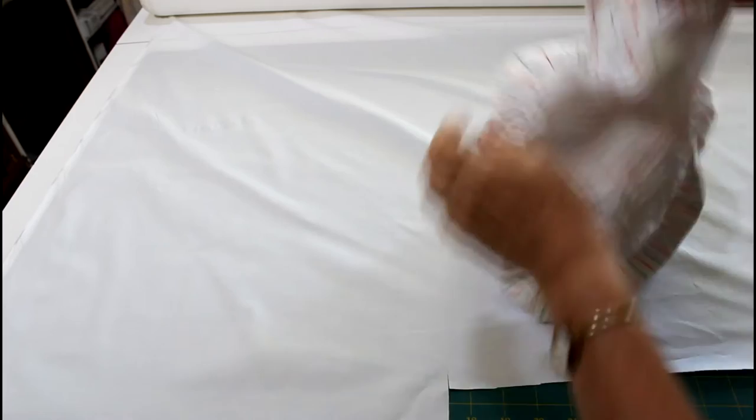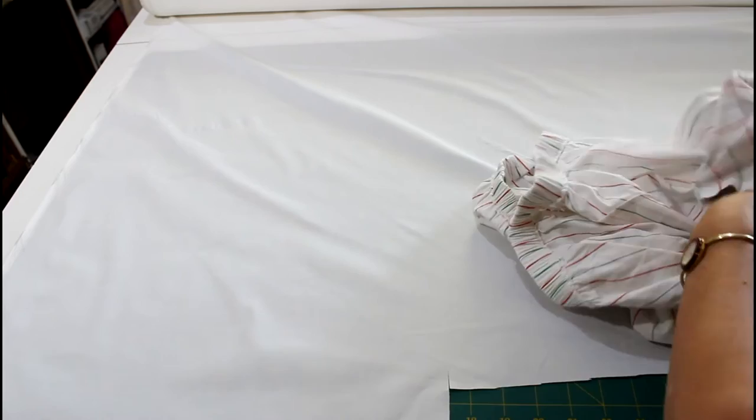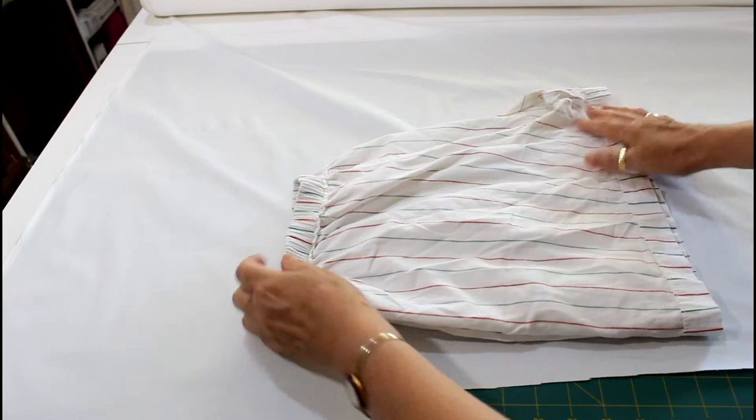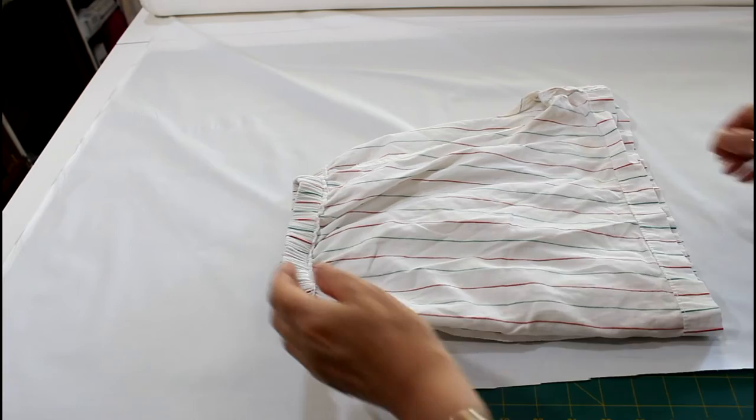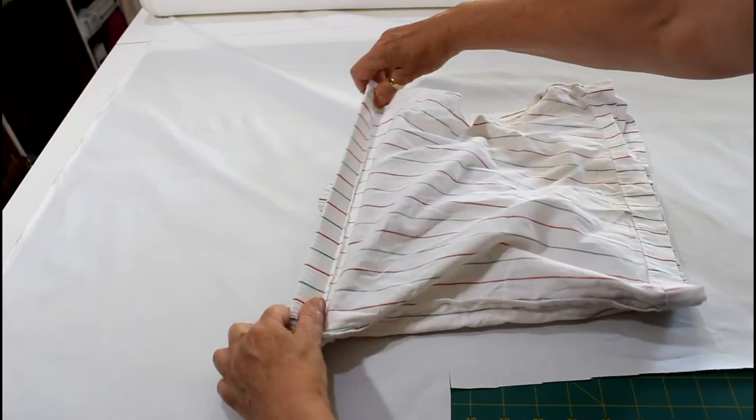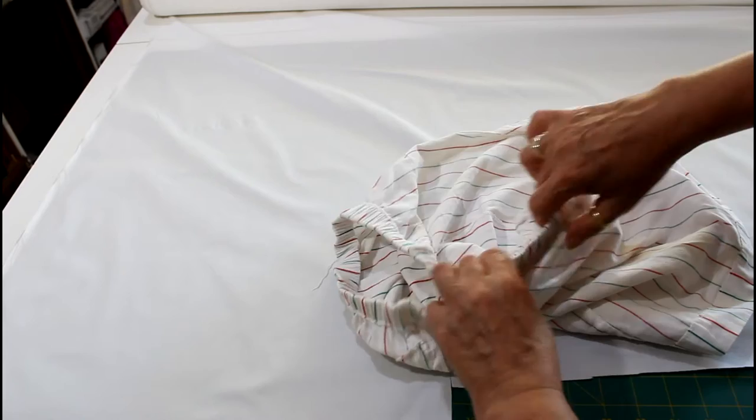The first thing you're going to do is turn the shorts inside out and then place one leg inside the other, doesn't matter which. So that you end up with a front and a back. Now what I'm going to do is create a pattern from this. I have it, so now what I want to do is just make it nice and as flat as possible.